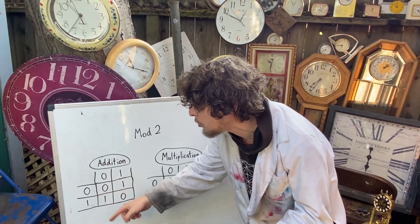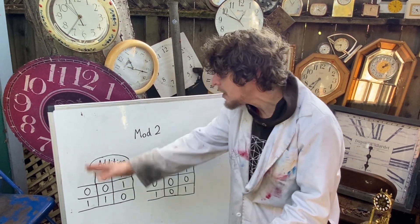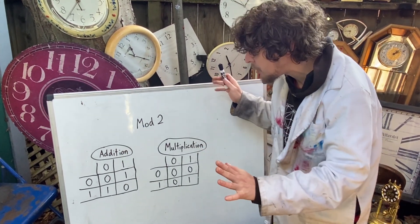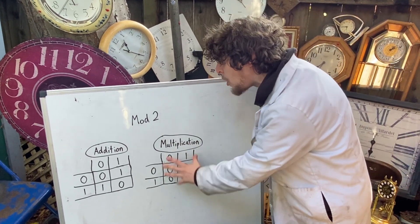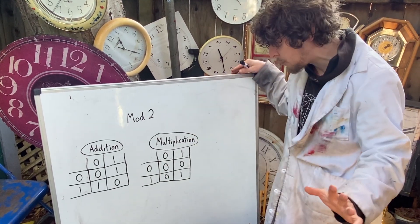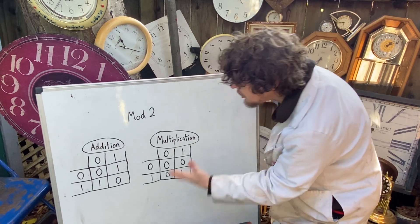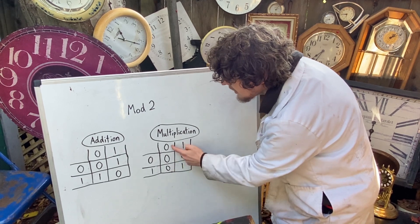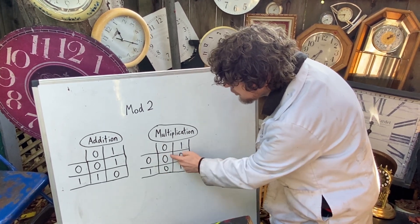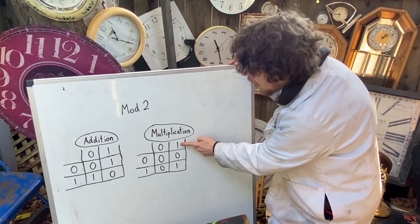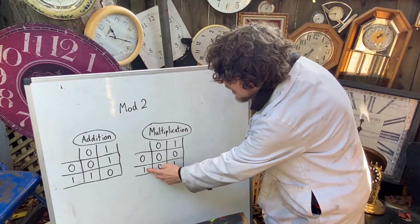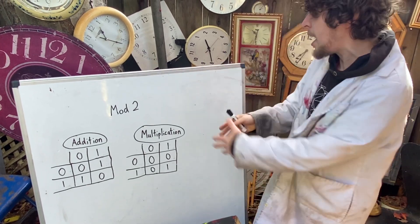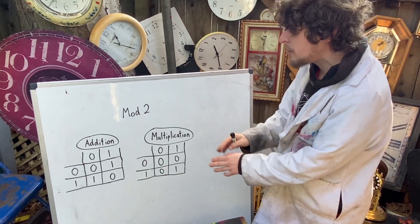We have these same rules where anything congruent to zero plus something congruent to one gives us one, and so on. But we're not as focused on addition for today's episode — we're going to be looking at some multiplication tables in different realms. Here we just have our good old even, or congruent to zero, times anything gives us another congruent to zero, where the odds congruent to one only times another odd give us another congruent to one.